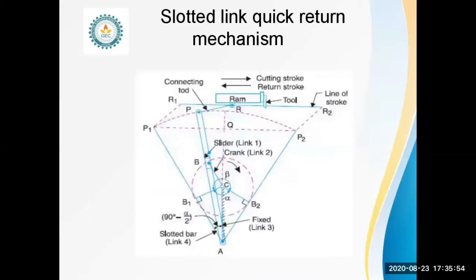Coming to the next one, the slotted lever mechanism. In that we can observe four links: the first link is a fixed link, the second one is a crank, the third one is a slider, and the fourth one is a slotted bar.